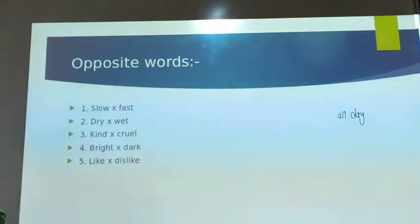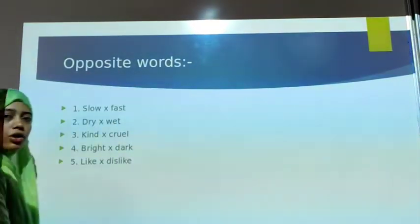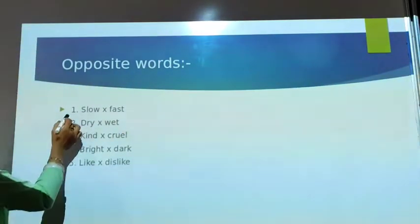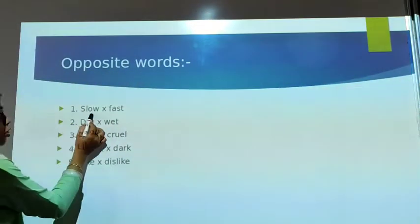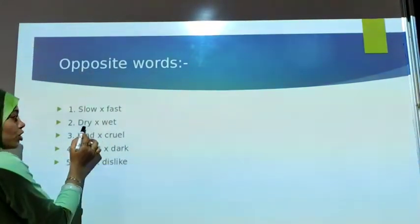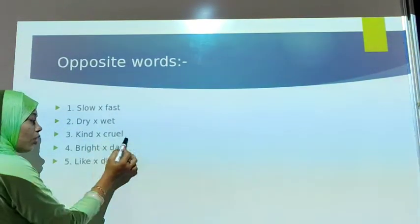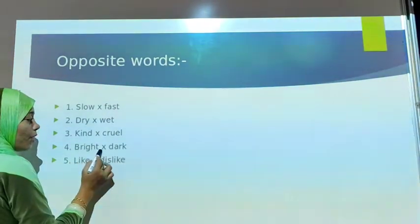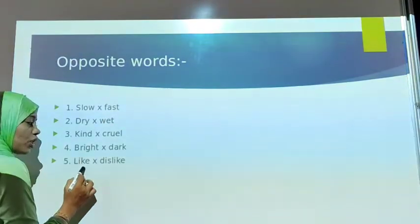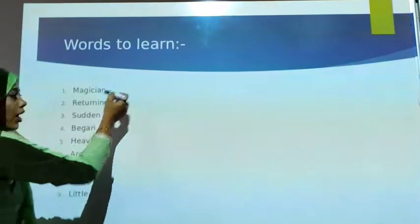Now let's start your class work — opposite words. Number 1: slow — fast. Number 2: glide — the opposite of glide is wait. Number 3: kind — the opposite of kind is cruel. Number 4: bright — the opposite of bright is dark. Number 5: the opposite of little is big. These are all the class work opposite words.